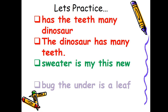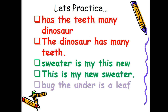Next one: 'sweater is my this new.' This is also a group of words that is not making any sense. Let's make a complete sentence with these words. Can you make one? Here is the right sentence: 'This is my new sweater.' This is a complete sentence. Look at the first letter — it is capital, and at the end I have put a full stop.